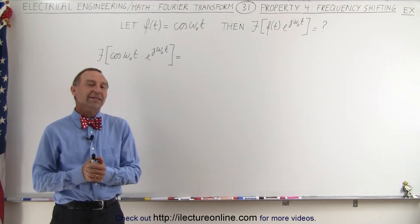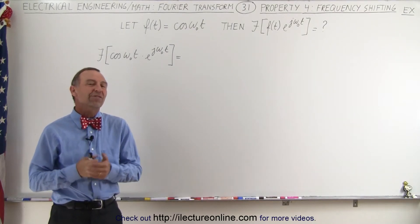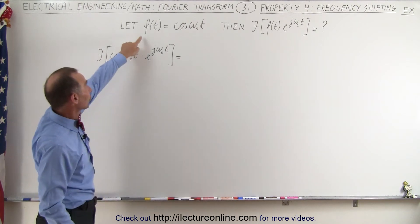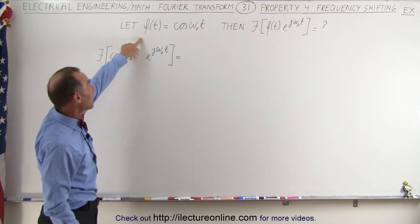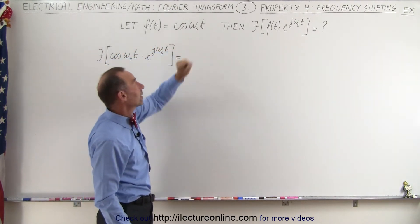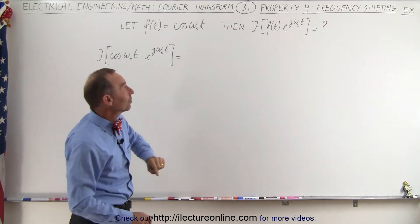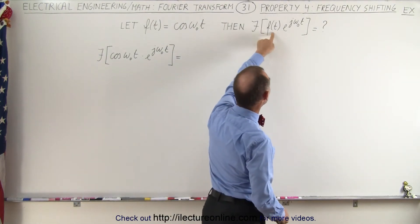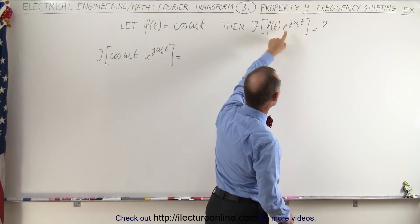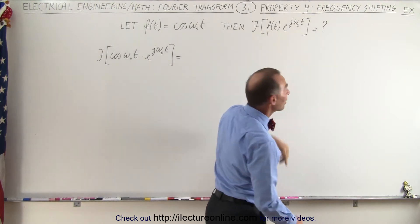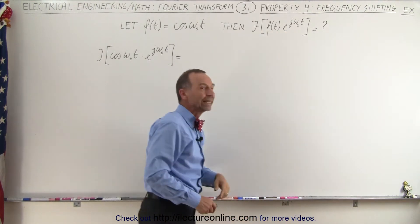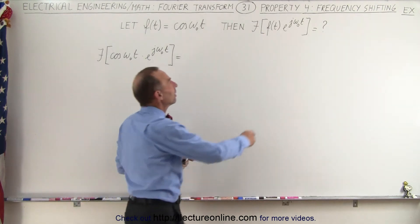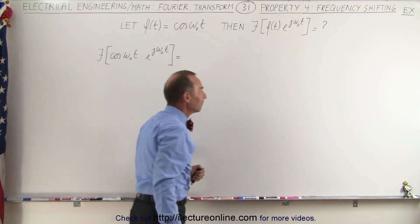Welcome to our lecture online. Now let's do an example of a frequency shift problem. We have an initial function in the time domain, let's call it cosine of omega t. We realize that if we take the Fourier transform of the original function in the time domain and multiply by e to the j omega t, we'll get the same Fourier transform but shifted in frequency by omega sub-naught.